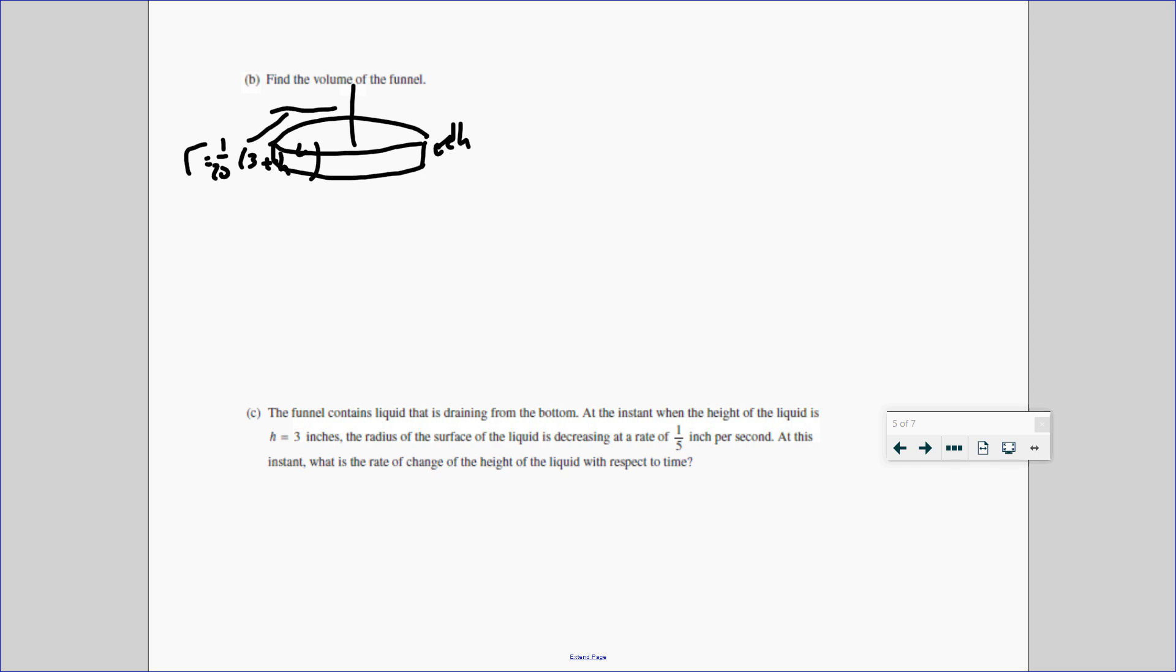So if we want to find the volume, it's going to be πr²h. So we're going to get π, the radius, which is 1 over 20, 3 plus h squared, squared, the height of dh. And we're going to integrate that from 0 to 10. Now, I'm going to clean this up a lot. If I square the two ones, that becomes 400. So we're going to get π over 400 from 0 to 10.